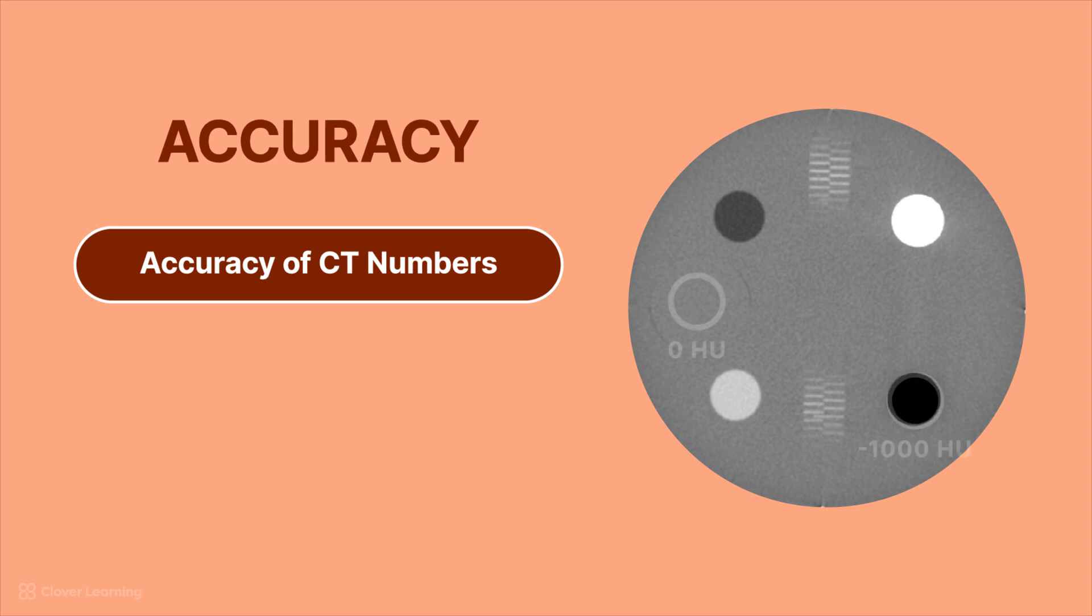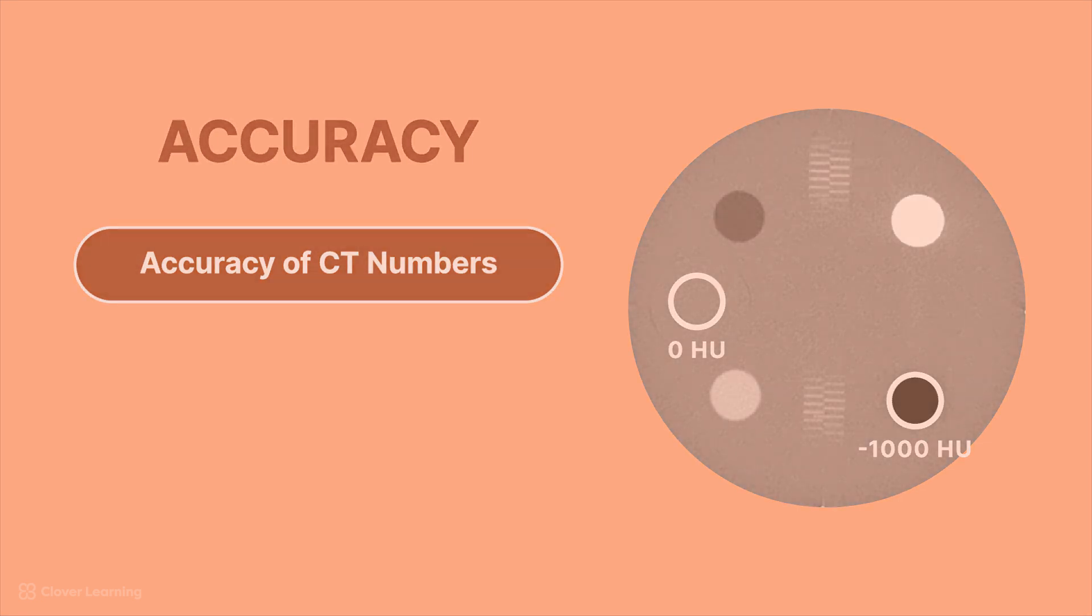If we place an ROI over the area representing air, we should get an accurate CT number of about negative 1000 Hounsfield units. But if we place the ROI over the area representing the consistency of water, we should receive an average Hounsfield unit of something very close to zero. Whether or not these numbers represent the expected CT numbers is the accuracy of the CT system.